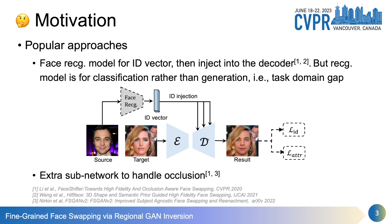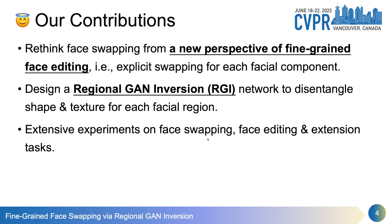Second, to handle the occlusion problem, an extra subnetwork is needed, such as in Face Shifter and FSGAM. To address these challenges more efficiently, in our work we rethink face swapping from a new perspective of fine-grained face editing. We designed a regional GAN inversion network to disentangle shape and texture information for each facial region, and conducted extensive experiments to show the effectiveness of our proposed method.